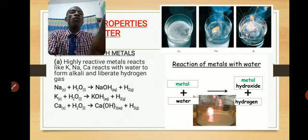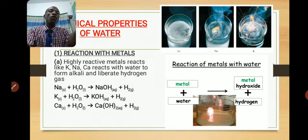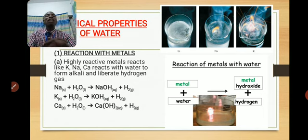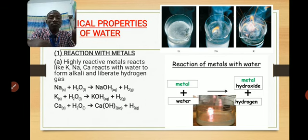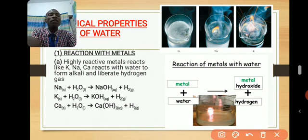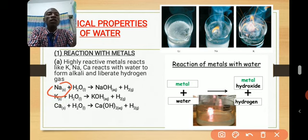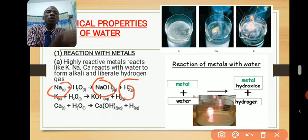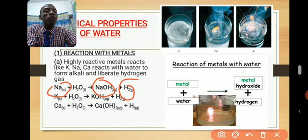Now let's talk about the chemical properties of water — specifically the reaction of water with metals. When water reacts with metals, different products are obtained based on the reactivity of those metals. For group one metals, they always generate hydrogen gas as well as leave behind an alkaline solution. For example, sodium reacts with water to form sodium hydroxide and liberates hydrogen gas. This is why we call group one elements alkaline metals — because they react with water to form an alkaline solution that turns red litmus blue.